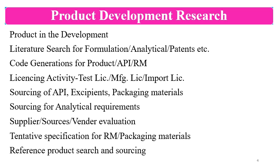Activities can go in parallel: literature search, licensing, sourcing of API, excipients, and packaging materials based on literature, and sourcing for analytical requirements like samples of API, impurity samples, columns, and reagents. Then supplier and vendor evaluation takes place — different vendors are contacted, their documents reviewed and checked, and their specifications reviewed. Tentative specifications for raw materials, packaging materials, and APIs can be made for the licensing activity. Then reference product search is done if the product is generic, and it is sourced from the country for which the product will be filed.